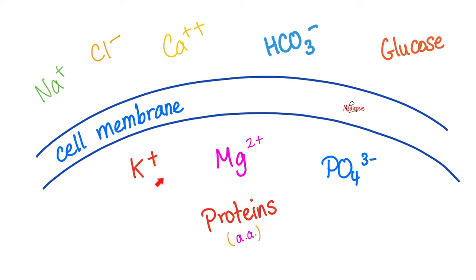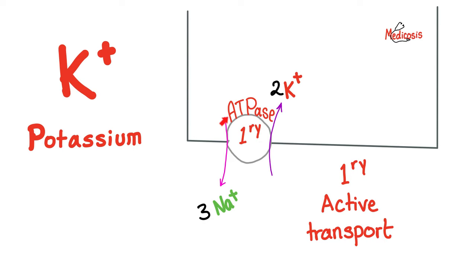Potassium is abundant intracellularly relative to extracellularly. It is the major cation in the ICF, or intracellular fluid. Why is that? It's thanks to the lovely sodium-potassium ATPase. It pushes sodium to the outside and potassium to the inside. That's why there is more potassium inside the cell relative to outside.